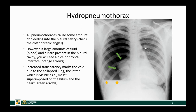Every time there is a pneumothorax there is always a tiny amount of hydrothorax because there is some bleeding into the pleural cavity. If there is more than the usual couple of drops of blood in the pleural cavity, you will see that the air and blood separate from each other nicely by a horizontal layer. The collapsed lung is visible overlapping the right hilar and mediastinal structures. This is what we call a hydropneumothorax.